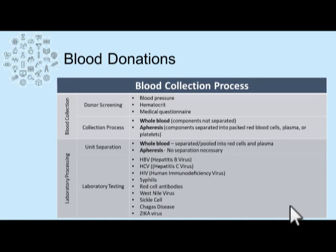So where do the blood products come from for donation? This begins with a screening process where donors will come in, have their blood pressure checked to make sure it's not too elevated, as well as their hematocrit to make sure they have an appropriate volume of cellular components in their blood. Next, a medical questionnaire will be asked to screen for high-risk activities where a patient may be more likely to carry a communicable disease. Once this process is completed, the collection process begins, where donor collection can occur in a whole blood donation, where components are not separated, or an apheresis donation, where blood products are separated into either packed red blood cells, plasma, or platelets.